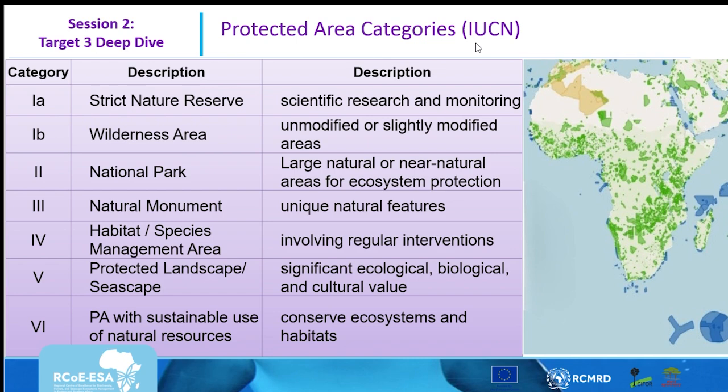Category 1B is wilderness area — large areas that are unmodified or slightly modified. Category 2 is national parks, which are large natural or near-natural areas for ecosystem protection. Category 3 is natural monuments — areas with unique features. Category 4 is habitat or species management areas, where we have a bit of human intervention to protect specific habitats or species of specific importance.